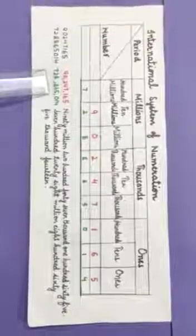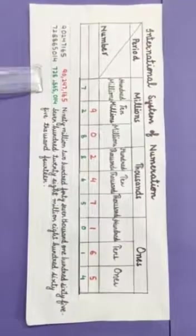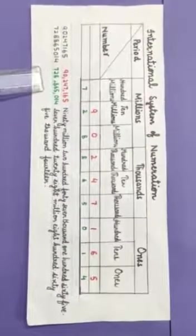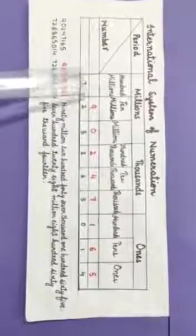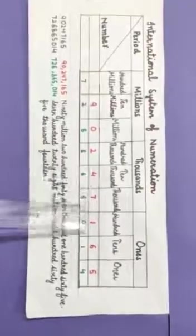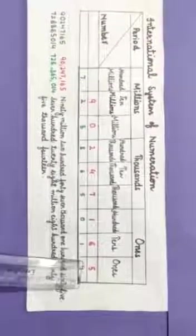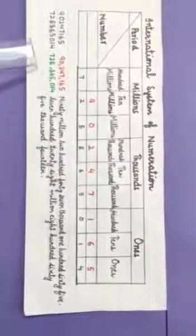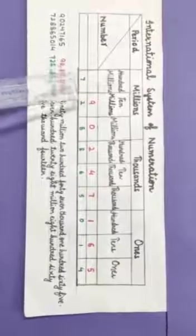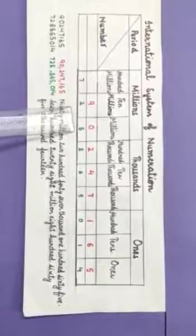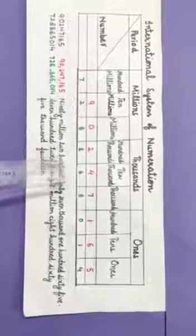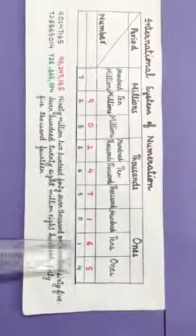Now, come to the same digits as we have earlier discussed in the Indian system of numeration. We will be writing it as 90,247,165. Now, come to the next number, 728,865,014.